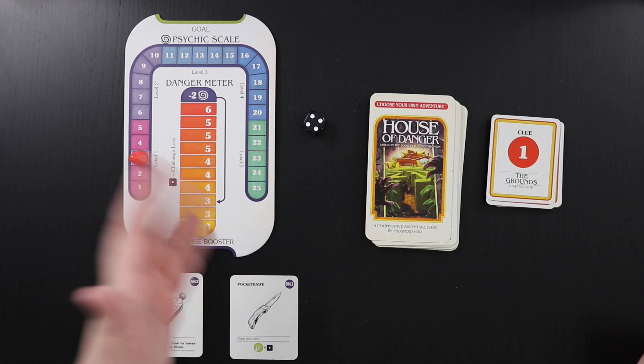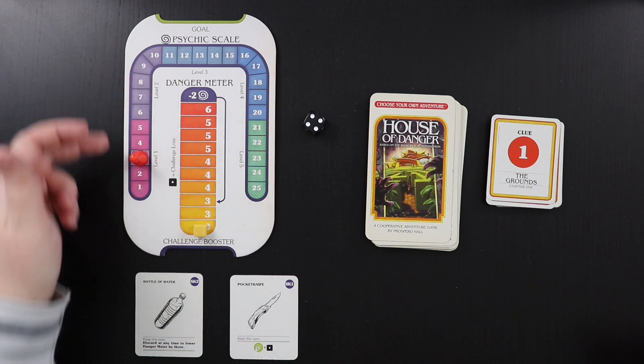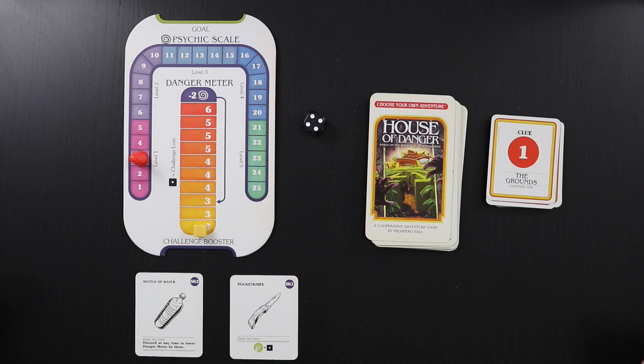But that's fine. The game totally accounts for all that. So once you hit the top of the danger meter, you lose two on your psychic scale and you go all the way back down, so back down to three. So you are never totally stuck in the game. It's just that a lot of bad rolls can punish you a little bit as you go.